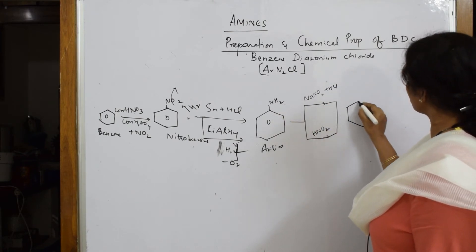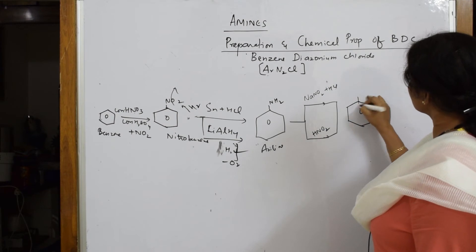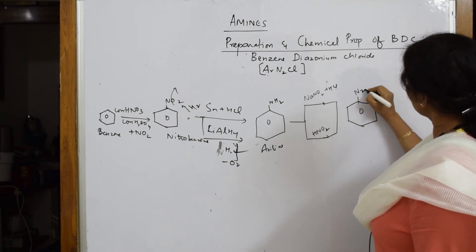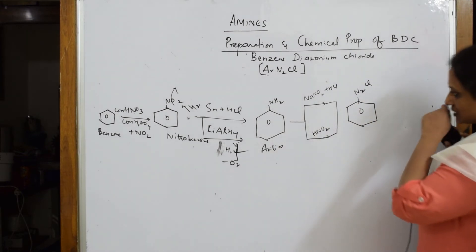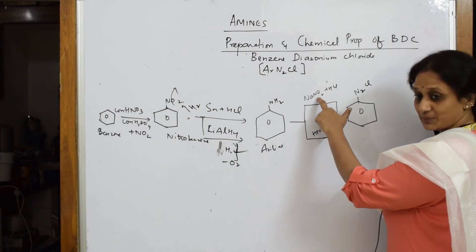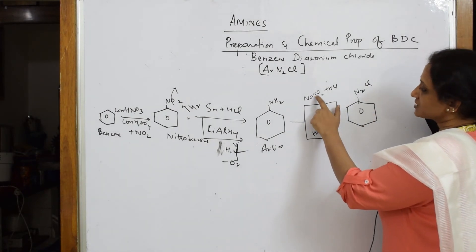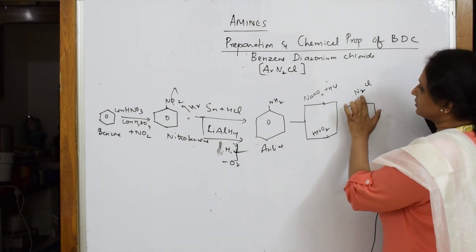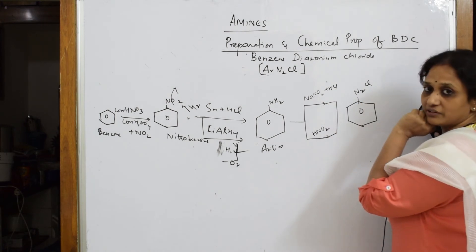From where did I get this? Reaction mechanism I'll show you that also. This nitrogen forms a bond here and Cl forms a bond here. Remember, that is the reason we are using this in acidic medium also.